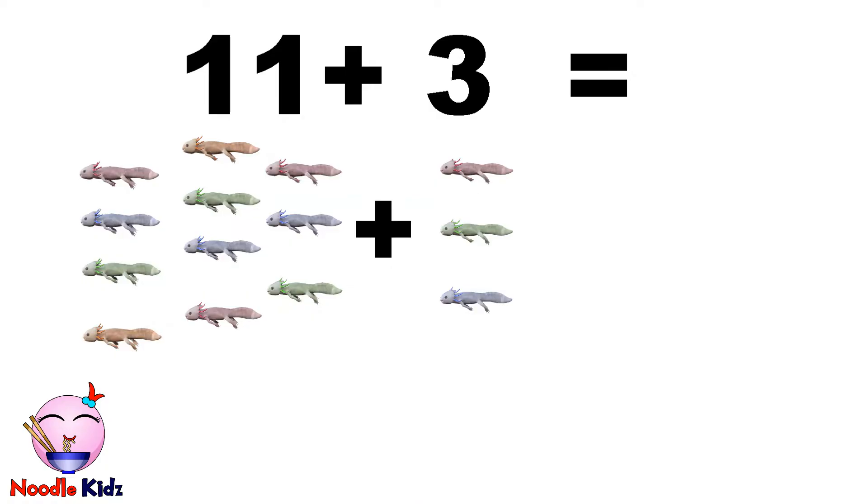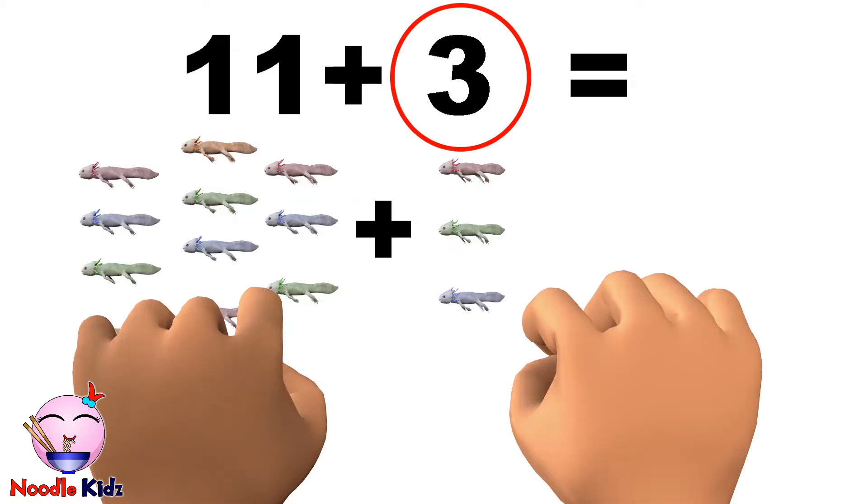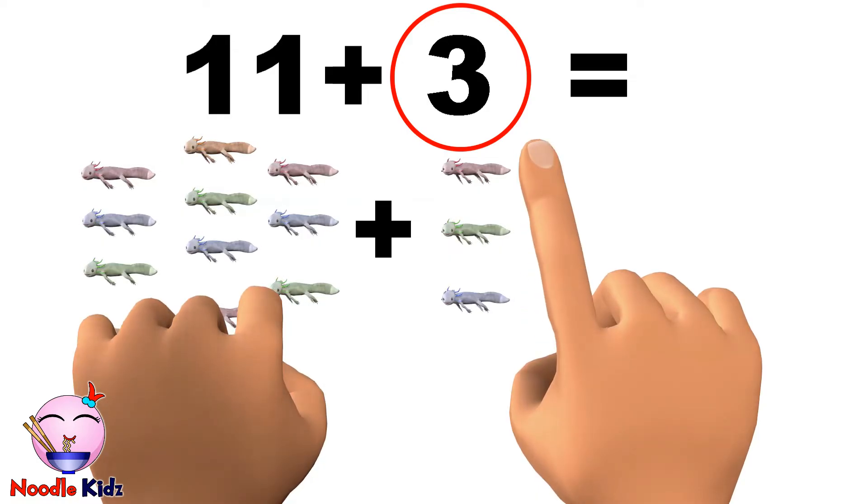Now, which one is the smaller number in this equation? Yes, 3 is the smaller number. Let's use our fingers for the smaller number. It is 1, 2, 3.